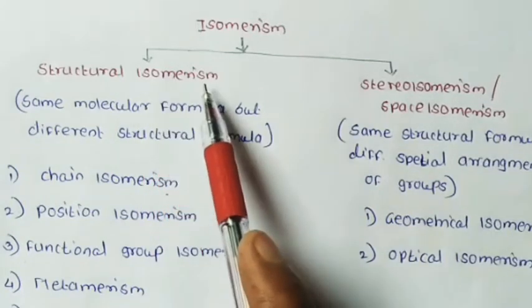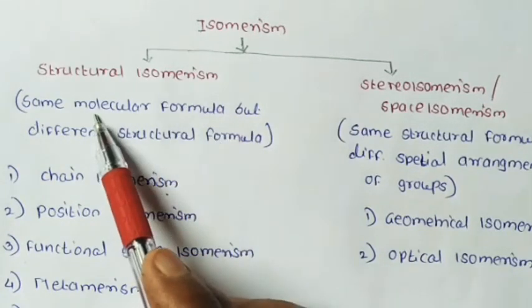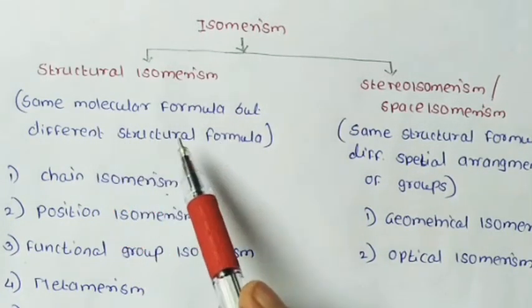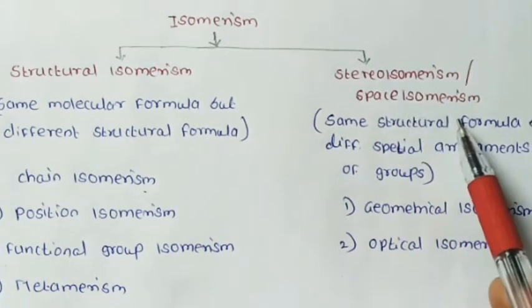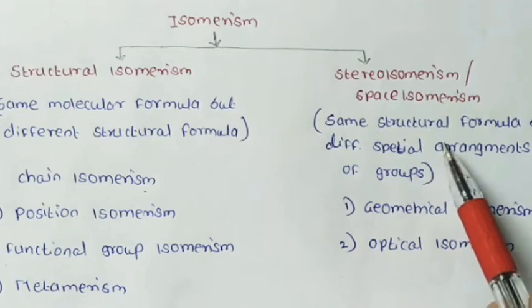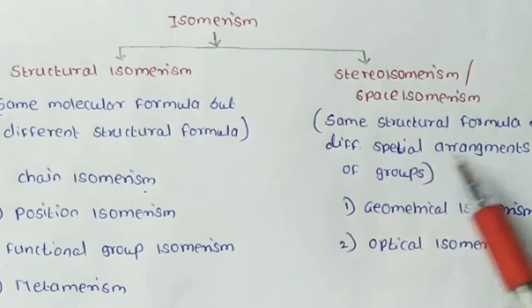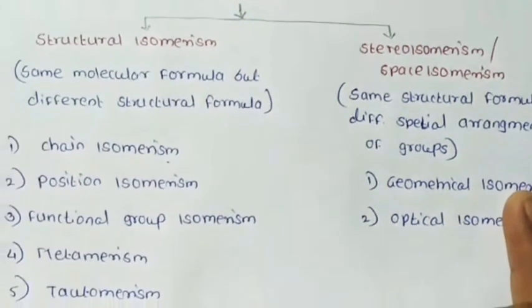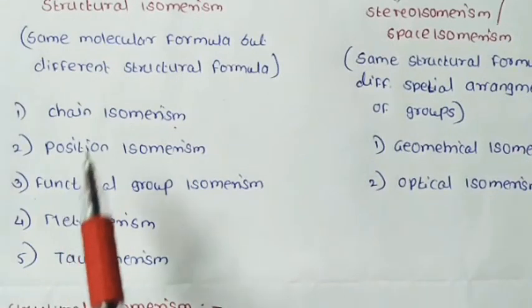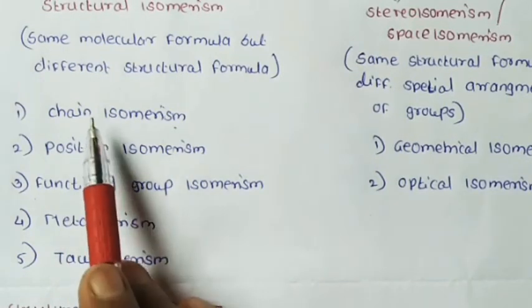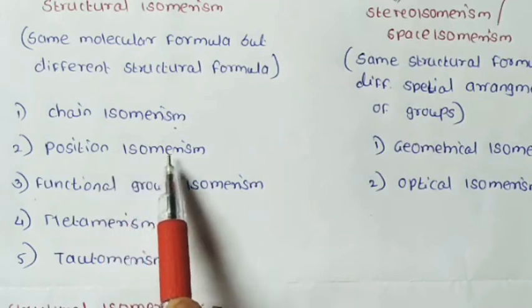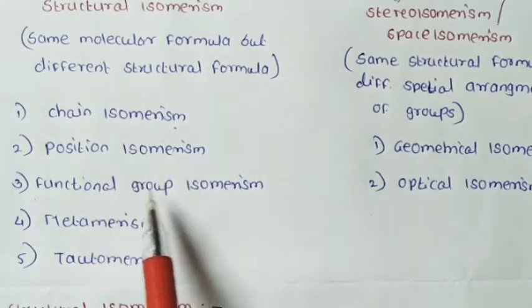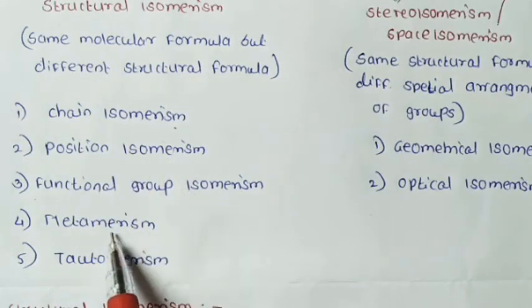Structural isomerism means same molecular formula but different structural formula. Stereo isomerism means same structural formula but different spatial arrangement of groups. Structural isomerism is further classified into five types: one is chain isomerism, second is position isomerism, third is functional group isomerism, fourth is metamerism, and fifth is tautomerism.